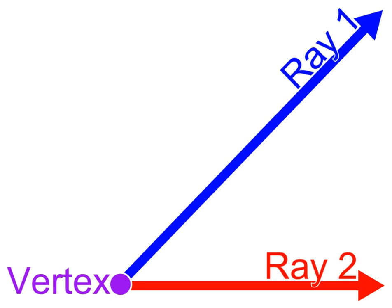When two straight lines intersect at a point, four angles are formed. Pairwise, these angles are named according to their location relative to each other. A pair of angles opposite each other, formed by two intersecting straight lines that form an X-like shape, are called vertical angles, opposite angles, or vertically opposite angles. The equality of vertically opposite angles is called the vertical angle theorem.